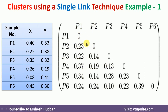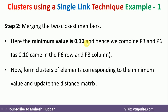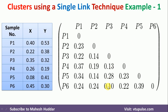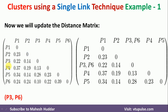Once we have the distance matrix, we go to step 2 to form the clusters. We merge the two closest members. Looking at the distance matrix, 0.10 is the minimum value, which is between P3 and P6. Because this is the smallest value, we merge P3 and P6 as the first cluster. We then remove the P6 row and column from the matrix.